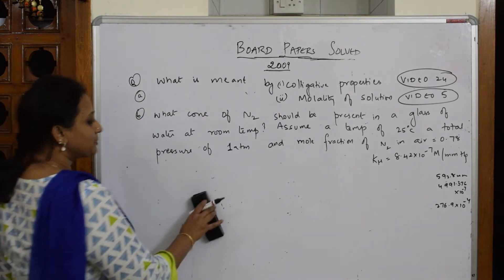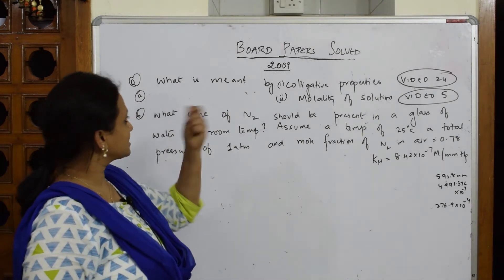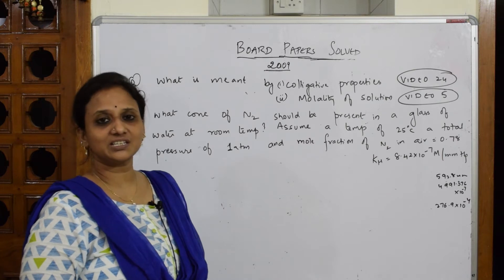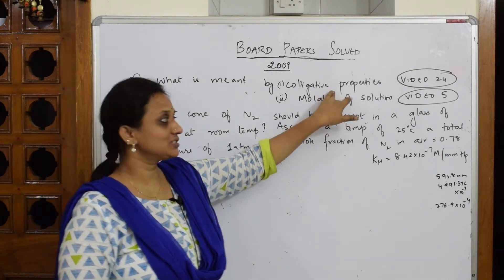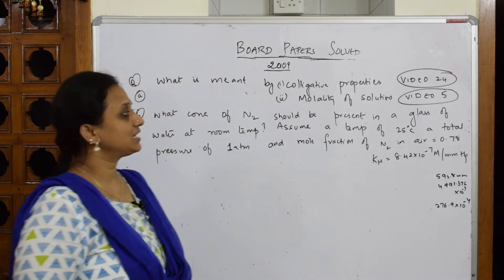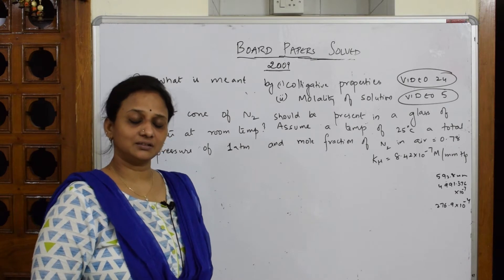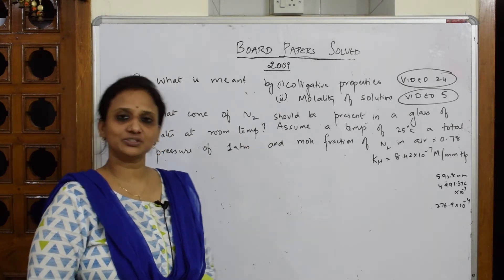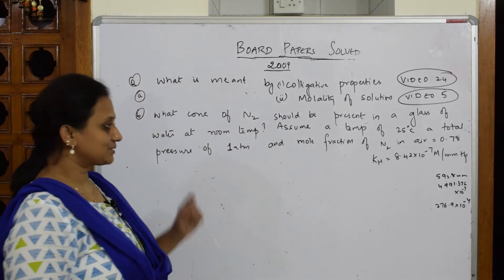In the 2009 paper, along with the numerical you also have definitions. So what is meant by colligative property or molality of the solution? Very simple — one mark each. Colligative properties — a detailed explanation is given in video number 24. Please watch that. Molality of the solution is labelled as video number 5 in your playlist. Simple basic definitions — you can go through those definitions and let us come back to the numerical.